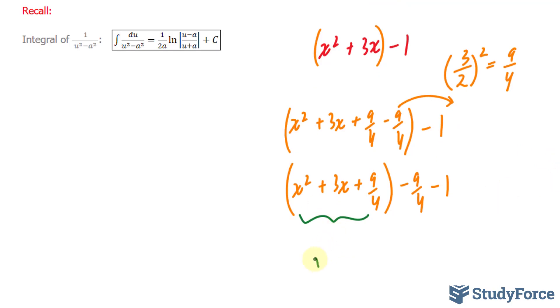And because it's a perfect square trinomial, we can write this out as x plus 3 over 2 to the power of 2 and you'll simplify minus 9 over 4 minus 1. You should end up with minus 13 over 4. You can always use your calculator for that as well.